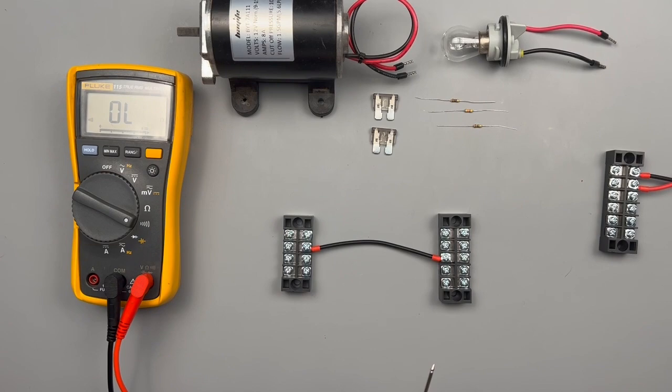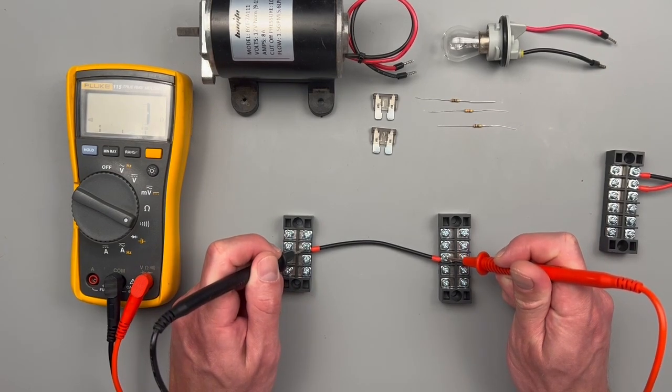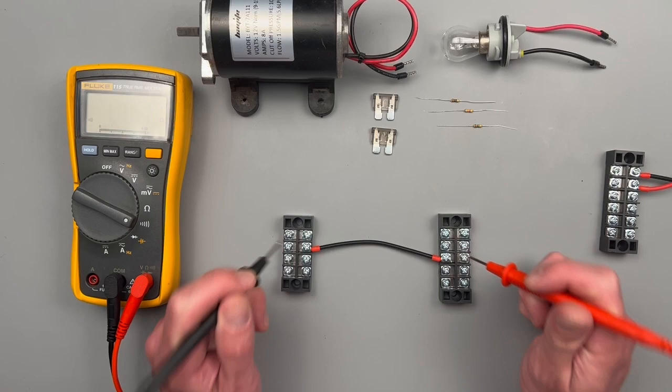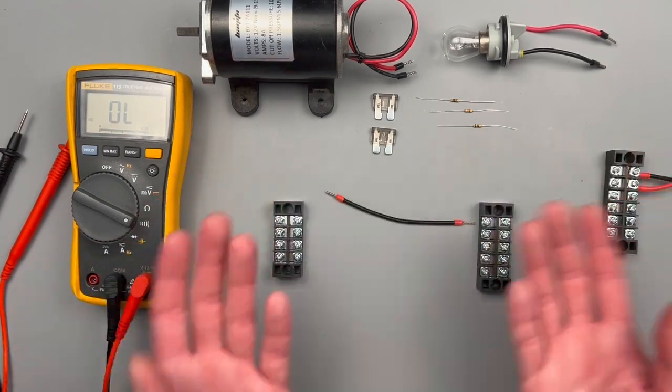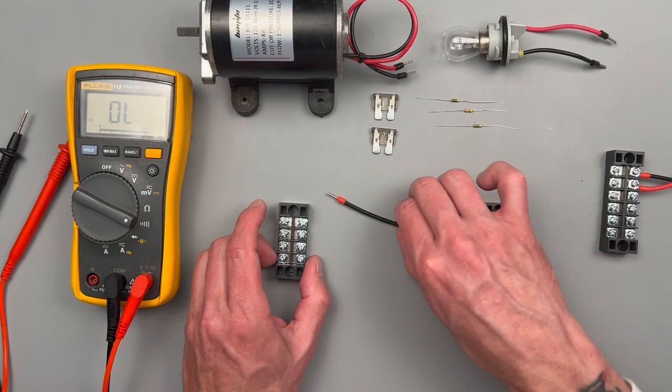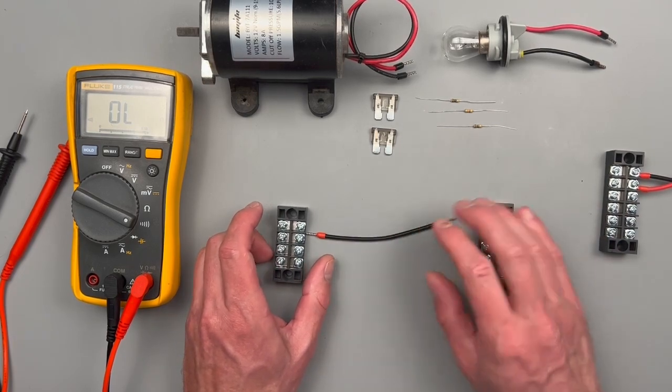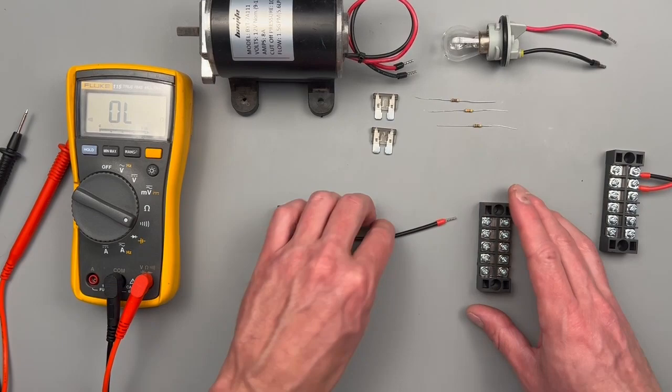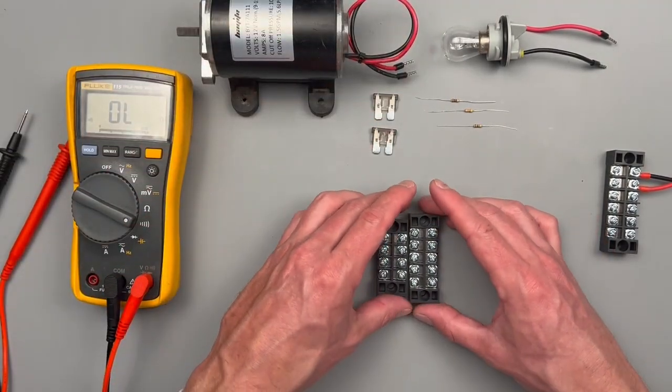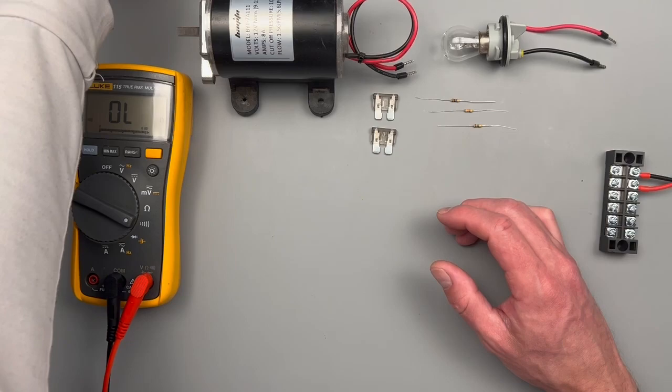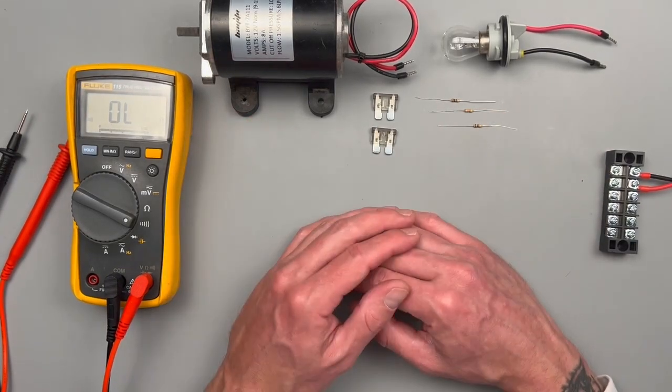Another situation where continuity can get you in trouble is a situation like this. This one's reading perfectly okay, it's not dancing around at all. Problem is that wire isn't properly secured to its terminals and that could cause a lot of intermittent issues. So again, that's somewhere where if we're just testing for continuity it can get us into trouble. There's other tests that we can do to check for those types of scenarios.